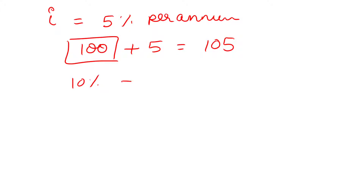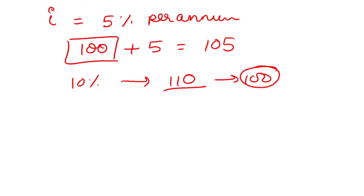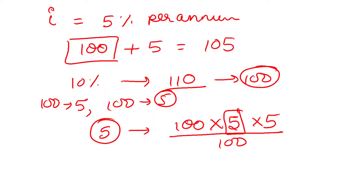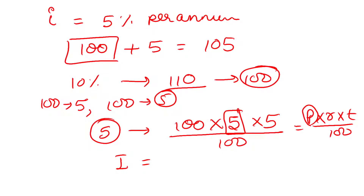If the rate is 10%, then the borrower will have to pay 110 rupees for using 100 rupees of the lender for one year. When calculating simple interest, you calculate the same fixed amount of interest every year based on the original principal.